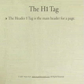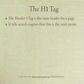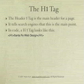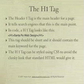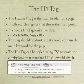The header one tag is a main header for a page. It tells search engines that this is the main point. In code, an H1 tag looks like this. This tag should be short and should contain the main keyword for the page. The H1 tag can be styled using CSS to avoid the clunky look that standard HTML would give it. I've avoided that clunky look by designing a site with CSS where the H1 tag has a pale blue background and a border, and it's all caps to give it some styling.